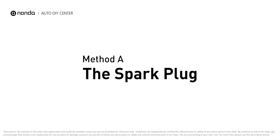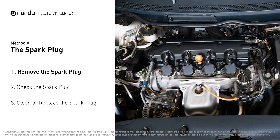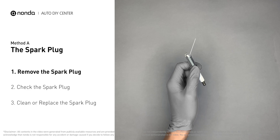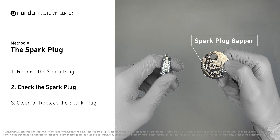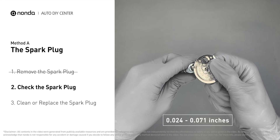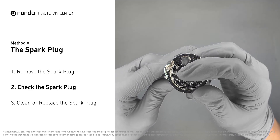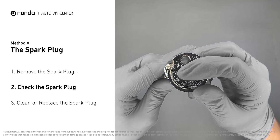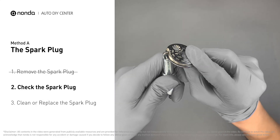Method A: the spark plug. The spark plugs are located at the engine end of the wires, under the plug covers that attach them. First, carefully remove the spark plug. Use a spark plug gapper to check the spacing — normally the spacing should be between 0.024 to 0.071 inches. If the spacing is a bit low, use the spark plug gapper to increase it back to the normal range.